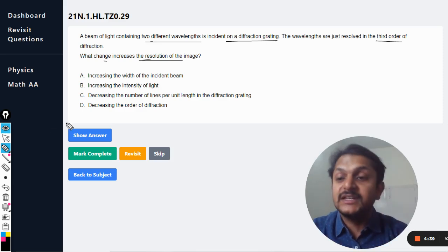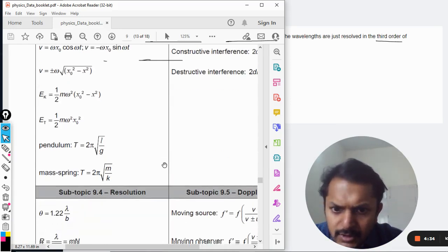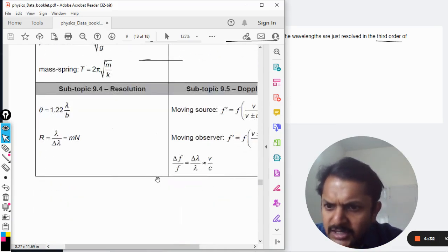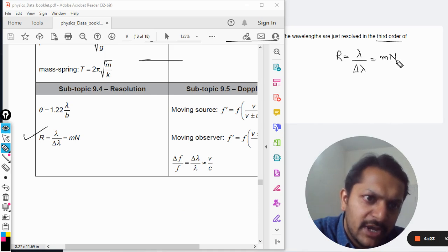The formula is given in the data booklet. I can show you that. Yeah here, yes, this one. This one is the resolution: R is equal to lambda average divided by delta lambda is equal to m into n, and that is already given here.